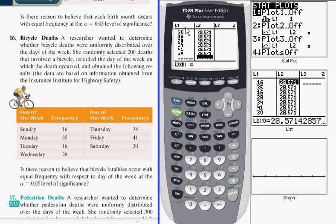So I have in list L1 my observed values from the table, and I have in list L2 my expected values, where the expected distribution is that the deaths occur with equal frequency.